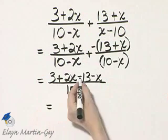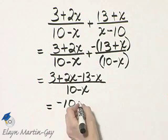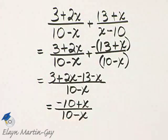Let's see, I have 3 minus 13, that's negative 10, and 2x minus x, that's plus x, over 10 minus x.